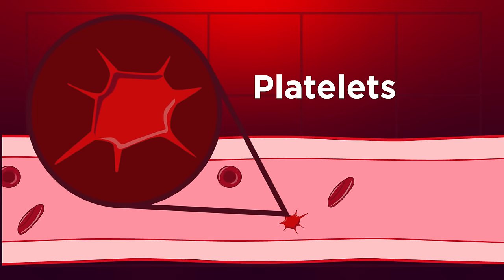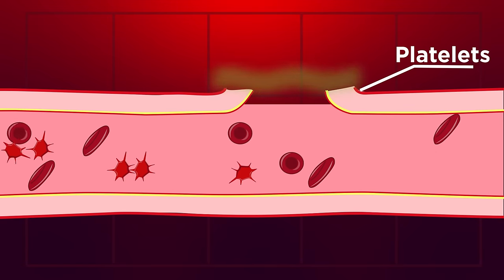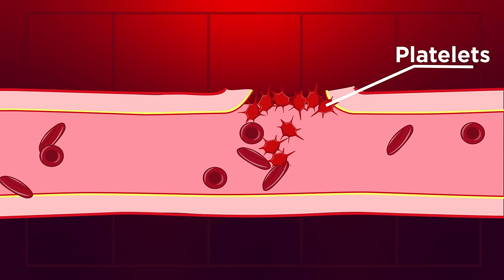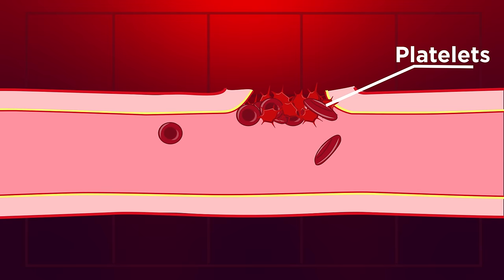So let's have a look at how this happens. Starting with platelets. These are tiny cell fragments that float around in our blood. When a blood vessel is damaged, collagen is exposed. This collagen exposure attracts platelets to the injured area. The platelets then stick together to form a plug. They've quickly built a barrier that stops us from losing too much blood.